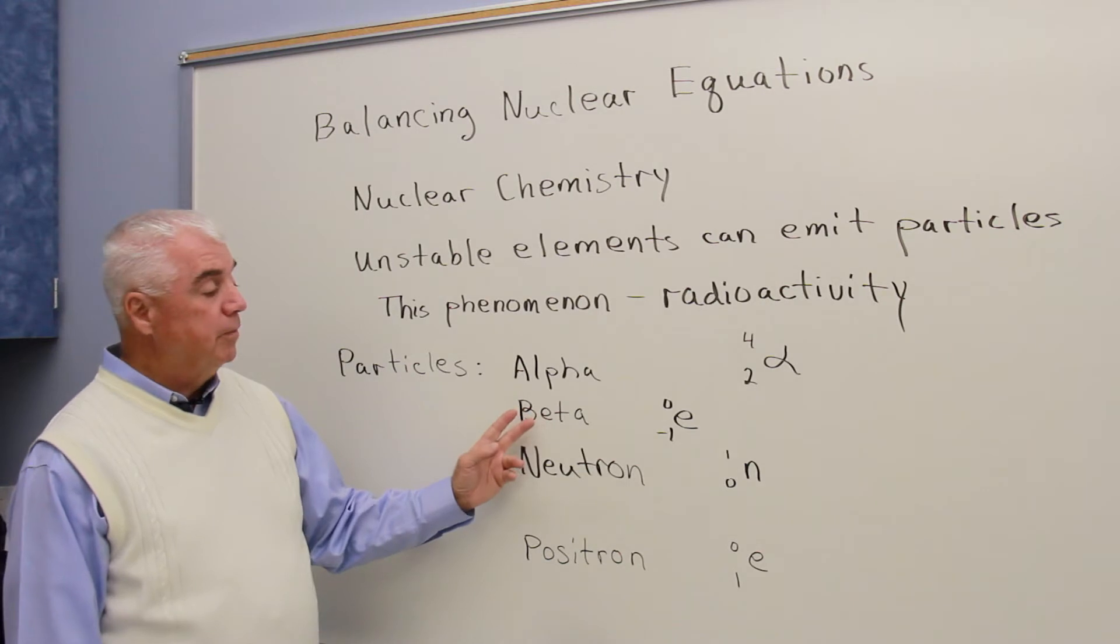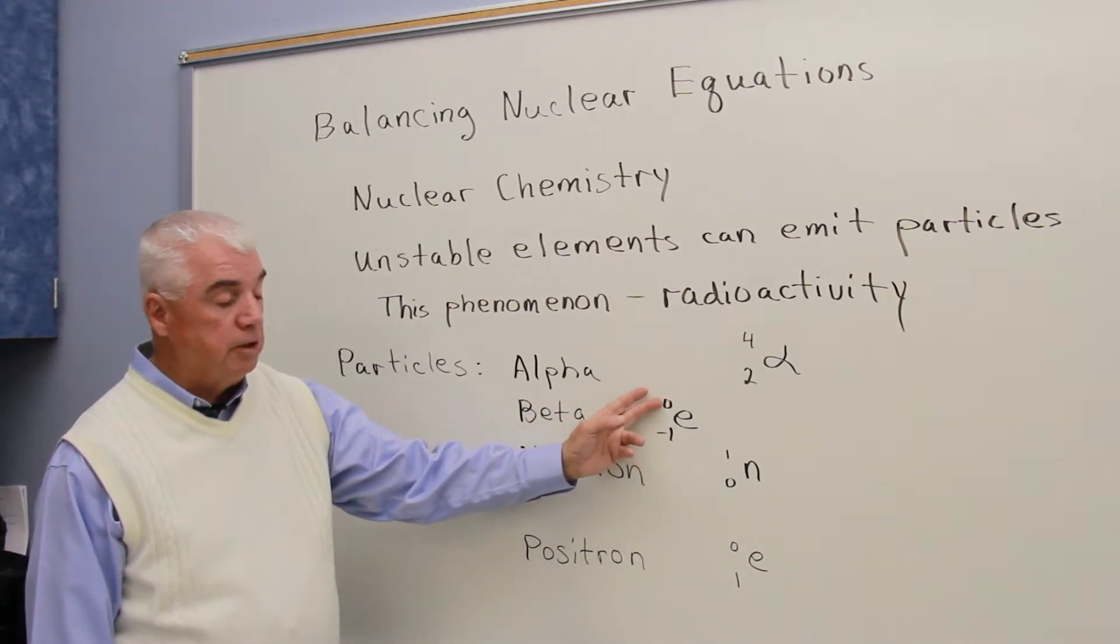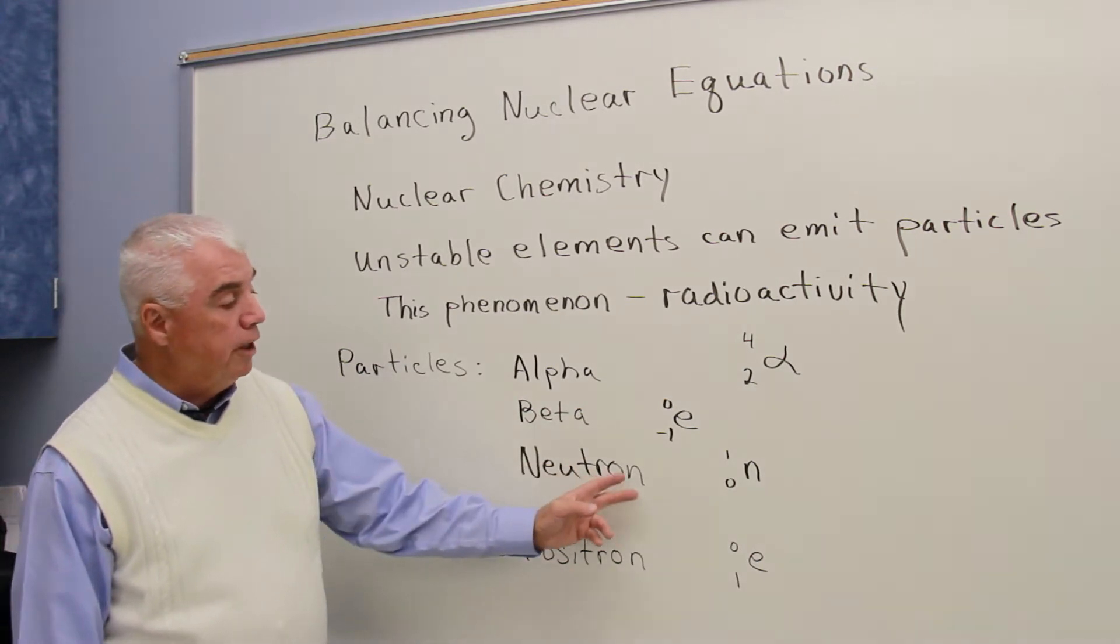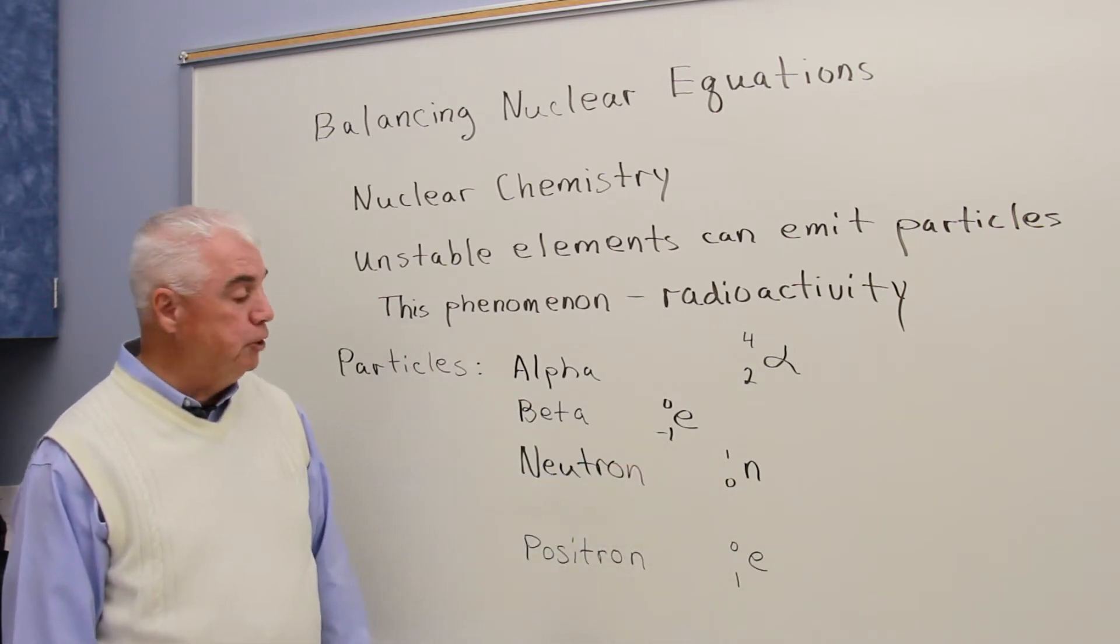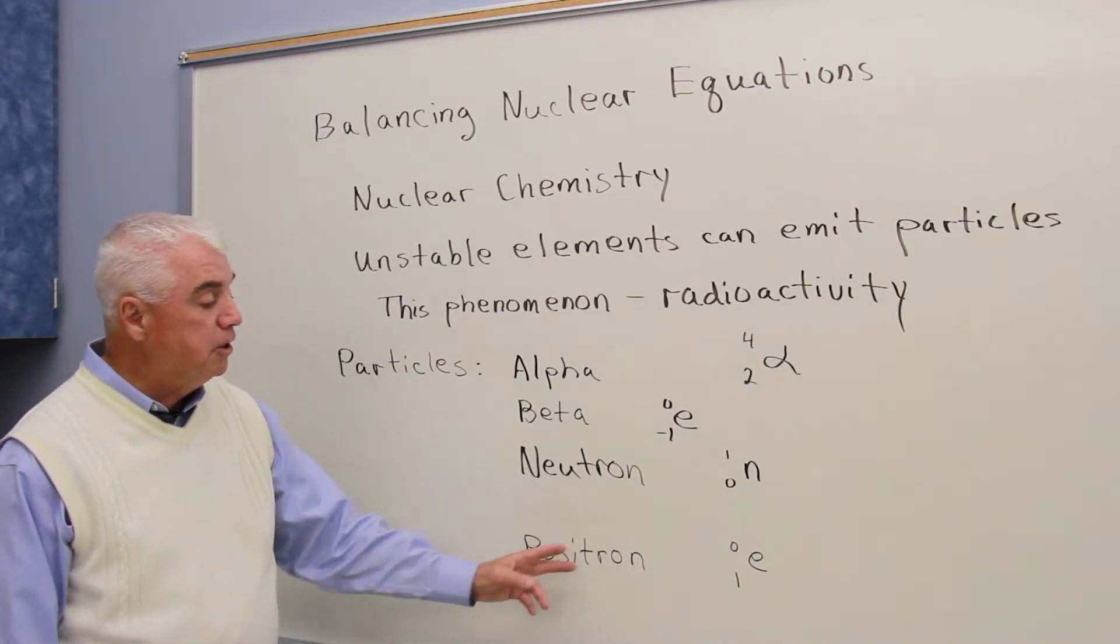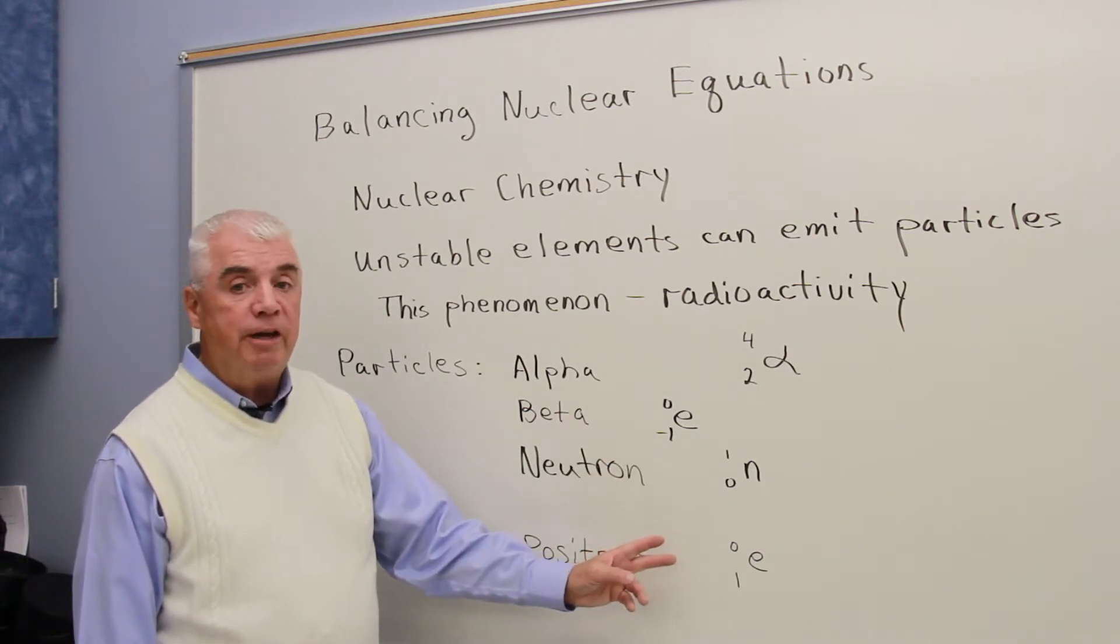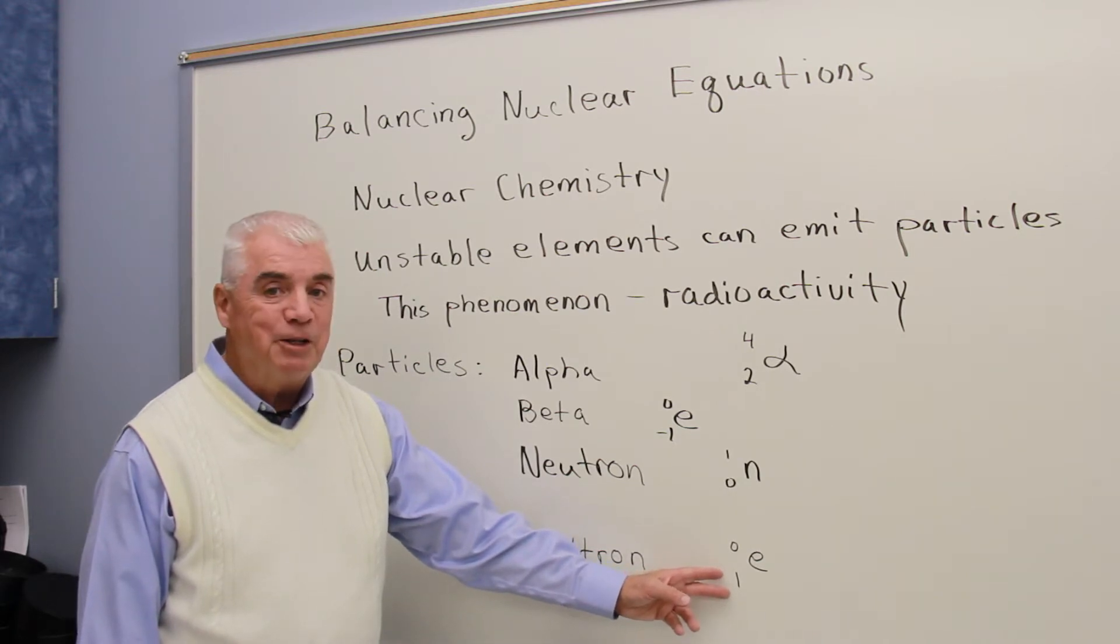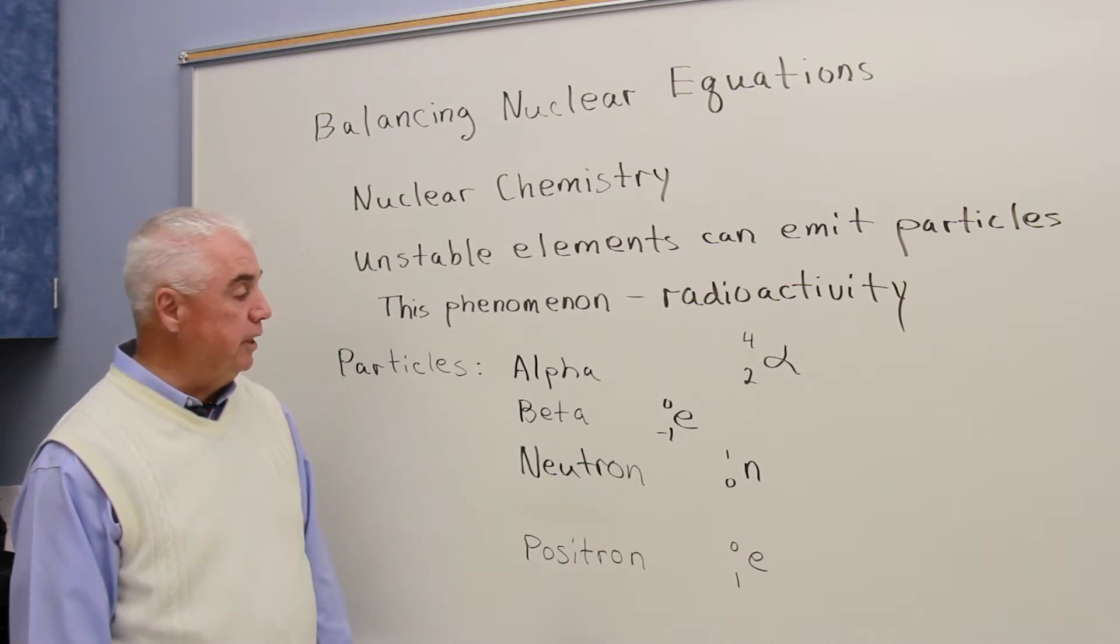A beta particle is like an electron, negative charge and zero protons and neutrons. The neutron, you're well familiar with its characteristics. One atomic mass unit up here. And a positron is like a positive electron, you could think of it that way. Rather than a minus one, it has a plus one down here, still zero atomic mass units.